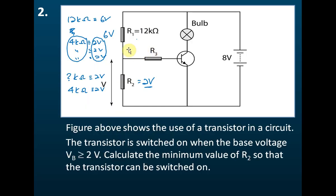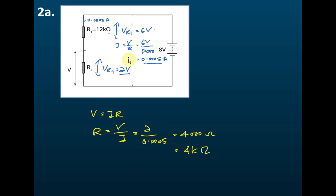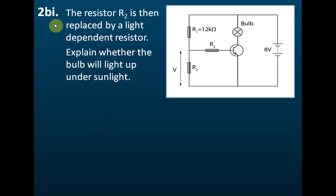You can directly use the potential divider method if you really understand it: 6 volts across 12 kilo-ohms, so 2 volts must correspond to 4 kilo-ohms. If you can't grasp the potential divider concept, use the alternative method — reduce the circuit to a two-resistor series circuit, find the current, then find the resistance of R2. Make sure you know how to solve this problem as it comes up frequently in exams.